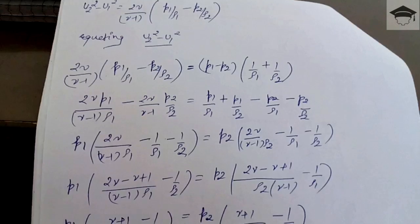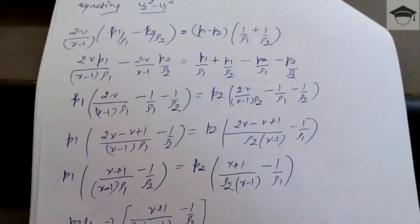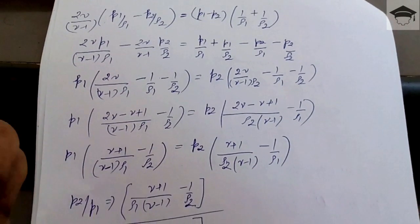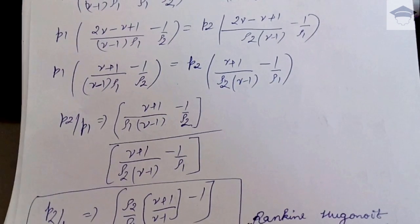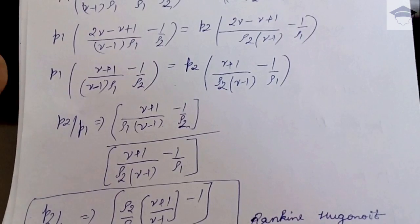Dividing complete equation numerator and denominator by ρ2, so we get p2/p1 = (ρ2/ρ1)[(γ+1)/(γ-1) - 1] / [(γ+1)/(γ-1) - ρ2/ρ1].